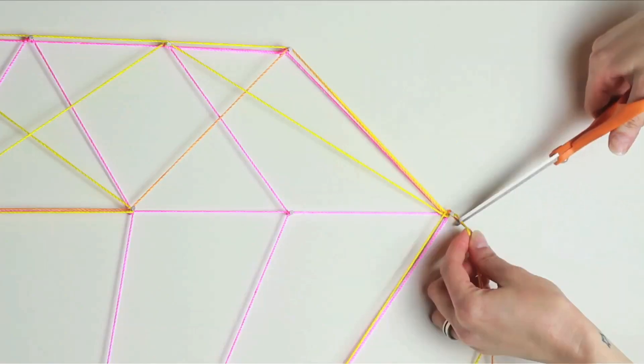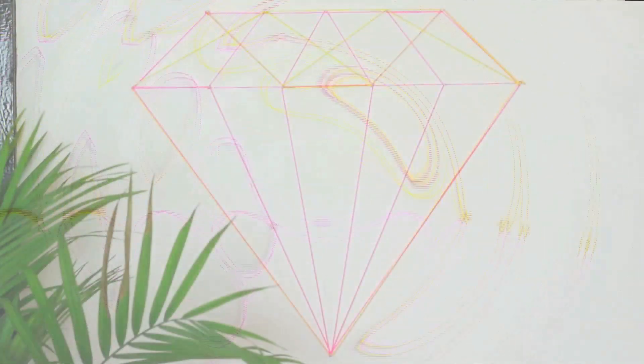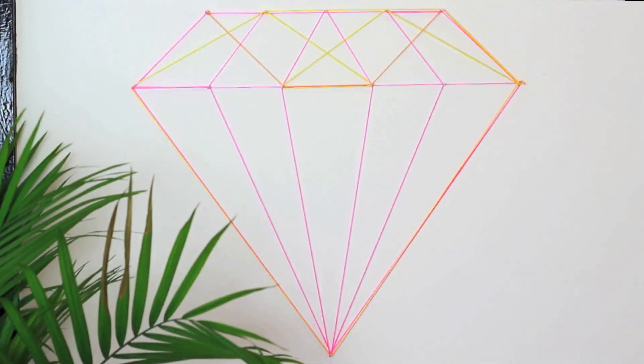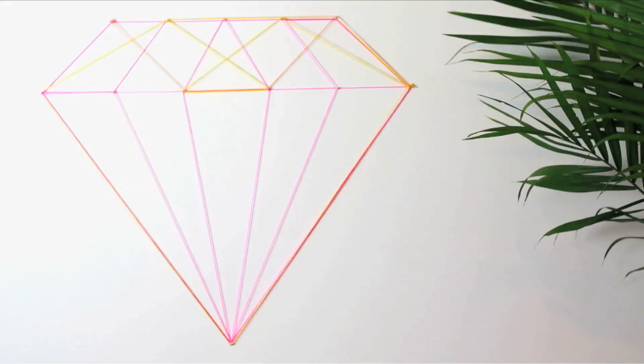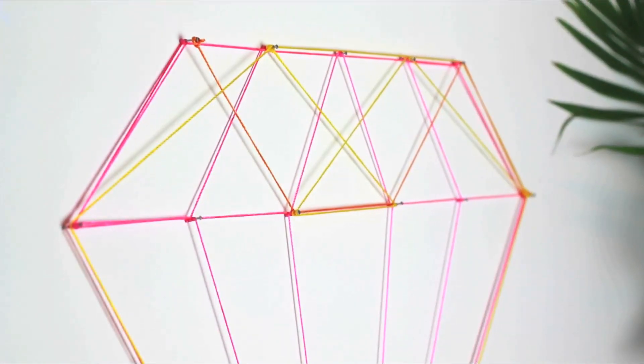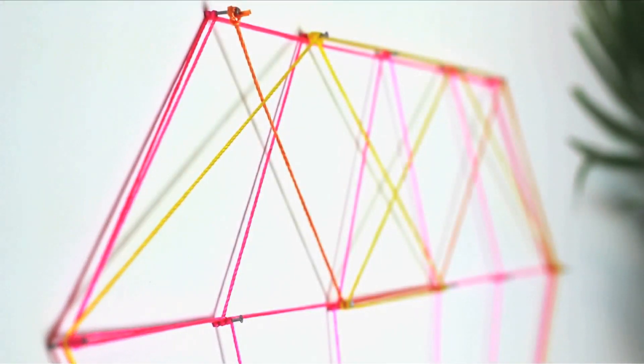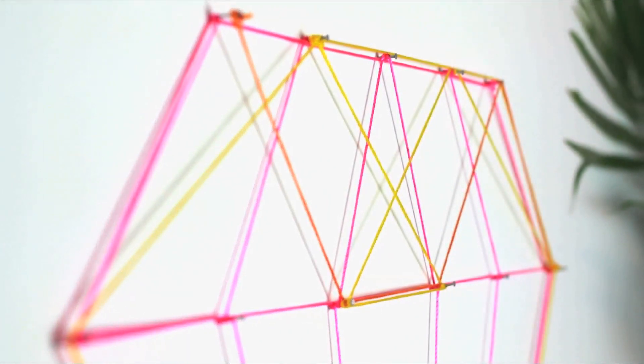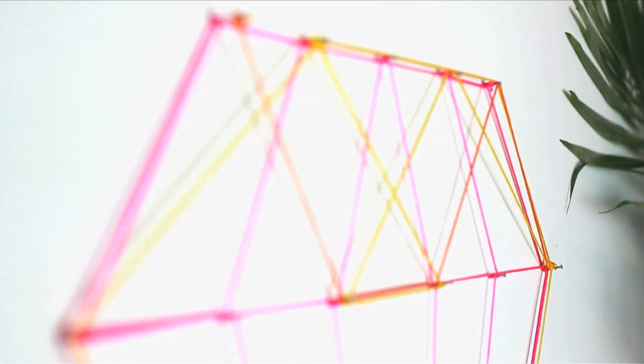And voila! You have a modern geometric diamond on your wall. You can do this on a board and mount it if you're scared of making holes in your wall, but it's super easy to cover those holes with just a little bit of spackle. This makes for cool wall decor or a fun photo booth backdrop for a prom, bridal shower, or a wedding.